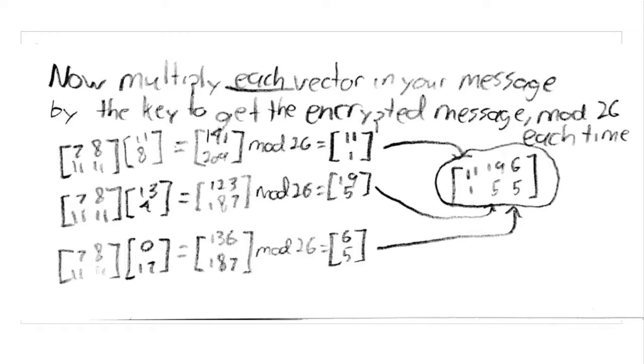The individual vectors are then recombined in the same order, resulting in a different 2-row matrix that now contains the disguised message.